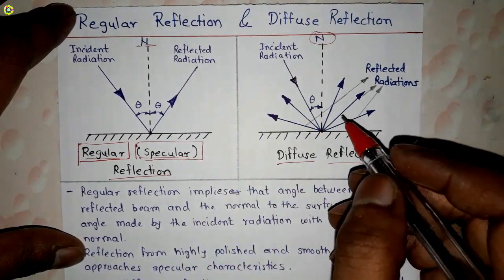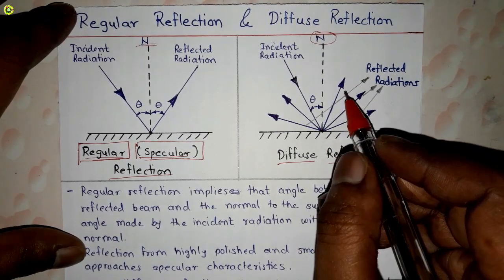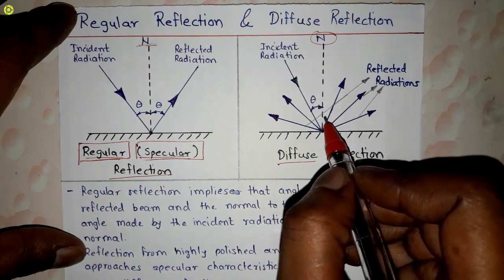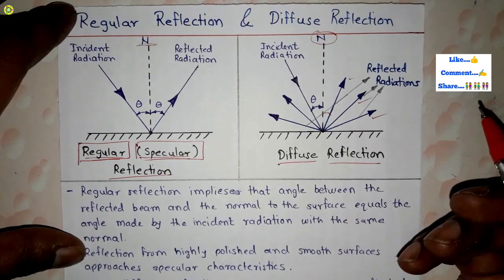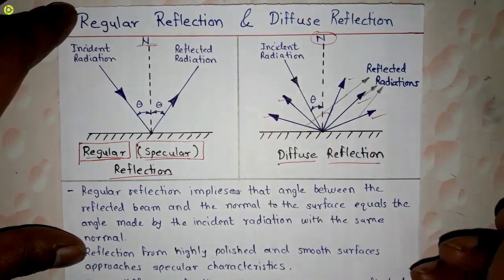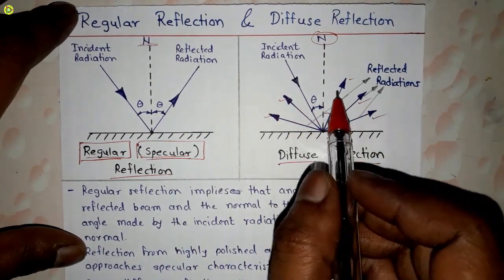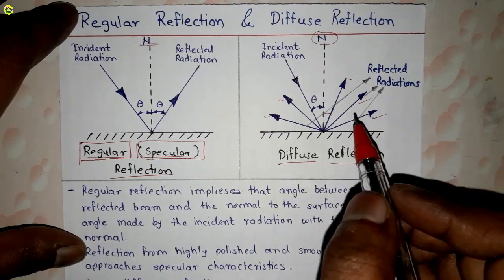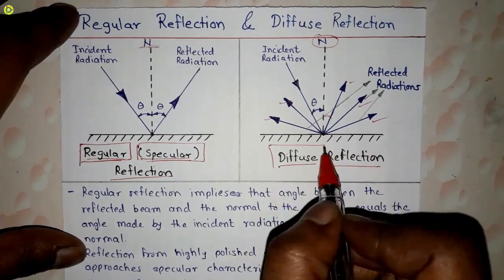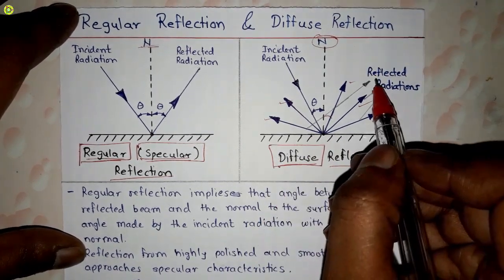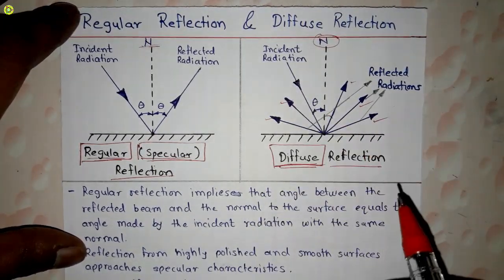Due to the rough surface, the incident radiation is reflected in different directions at different angles — multiple reflected beams scatter outward. This scattering of reflected radiation in different directions is called diffuse reflection.